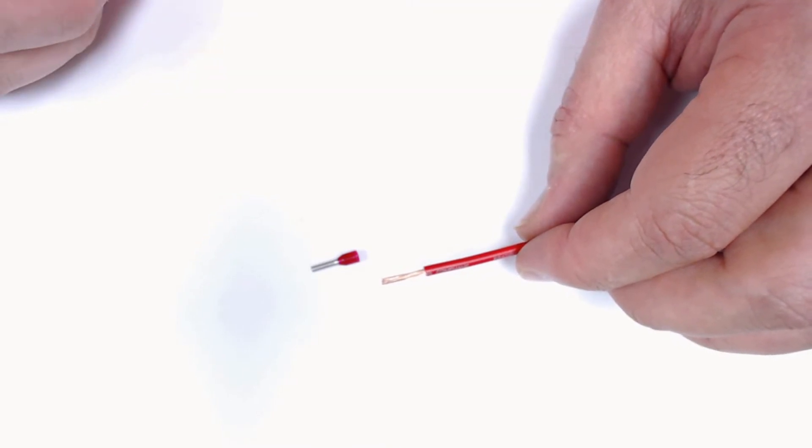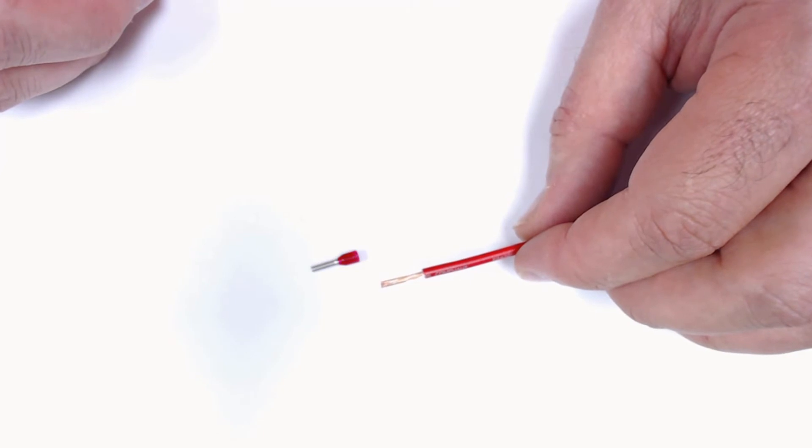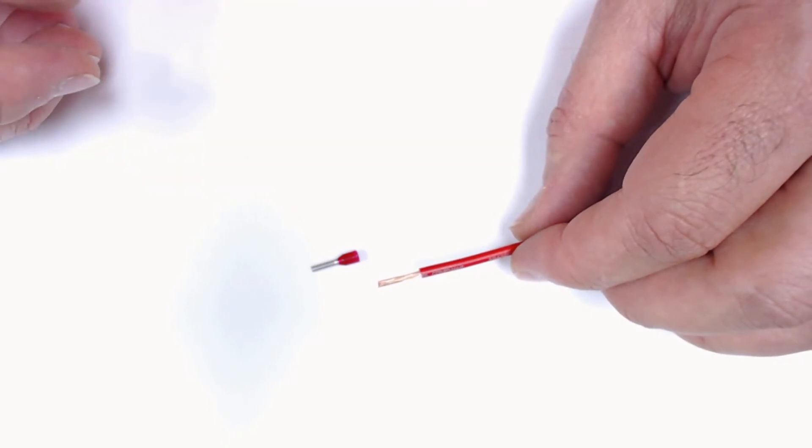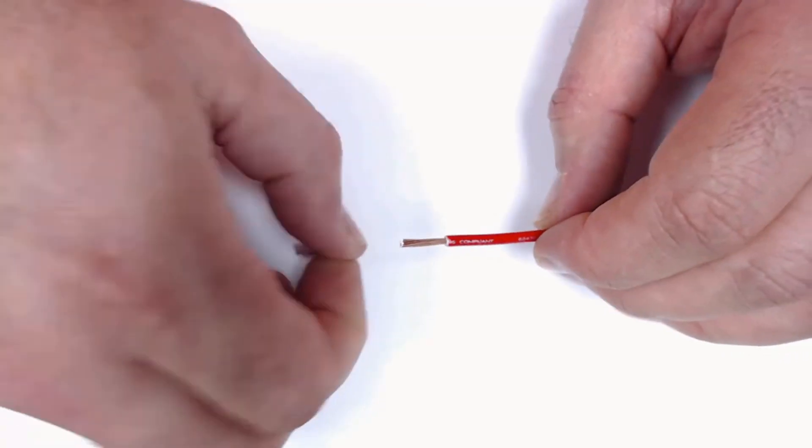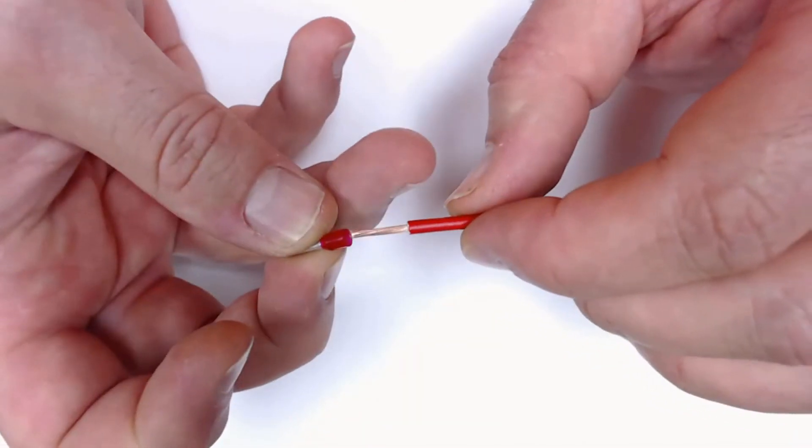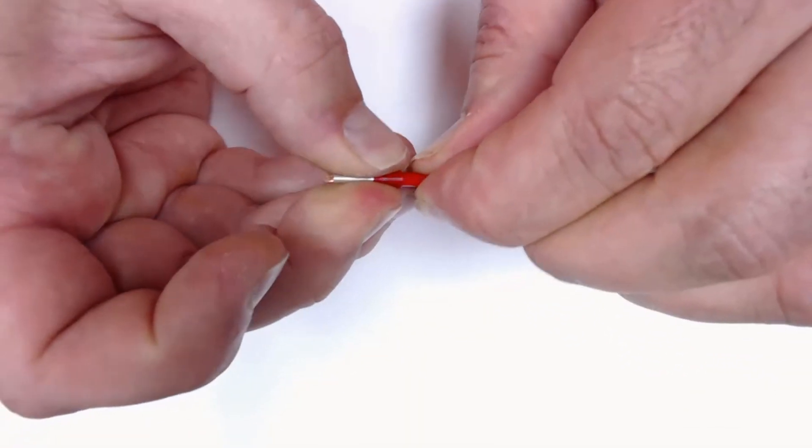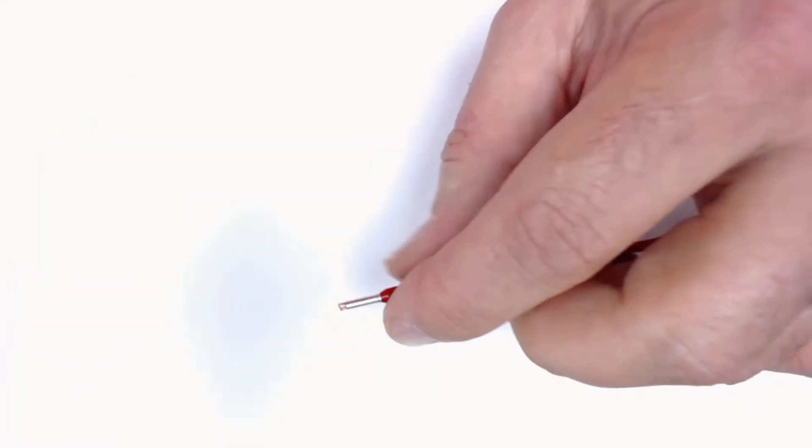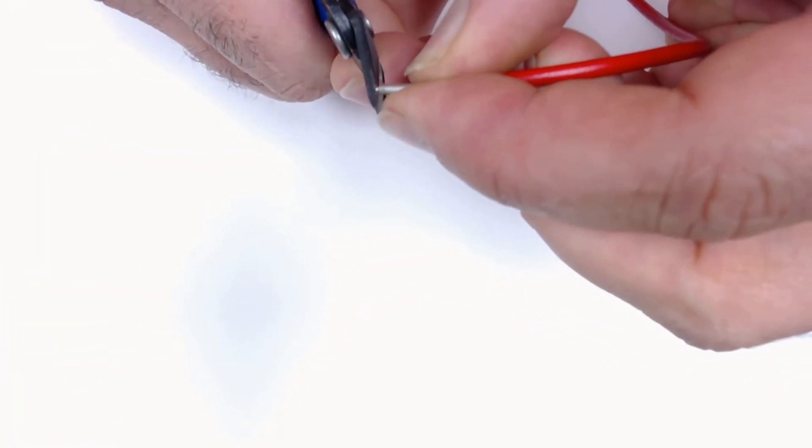Here we have one of our 16-gauge ferrules that I'm going to crimp on here and show you a little trick that I learned to help the ferrule insert into the Weidmuller connector a little easier than normal. We're going to do the same thing we did in the previous demo. We're going to make sure the strip length is right. Now it sticks out a little bit past here, so we're going to trim that flush. We don't want those strands sticking out too far.